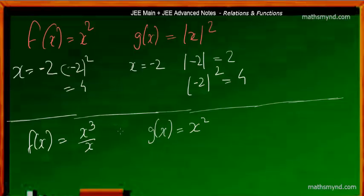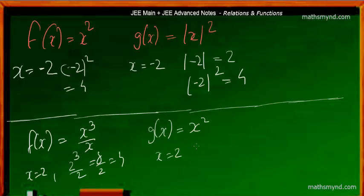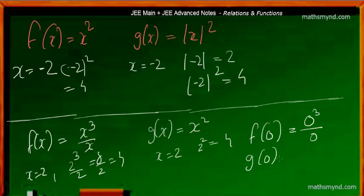But wait — there is something interesting. If x is equal to 2, then f of 2 is 2 cubed divided by 2, that is 8 divided by 2, that is 4. And g of 2 is 2 squared, that is also 4. Again the input and output values are the same. But what if the input x is 0? Then f of 0 would be 0 cubed divided by 0, and division by 0 is undefined. So this is the problem — because of that, f of x is not equal to g of x.